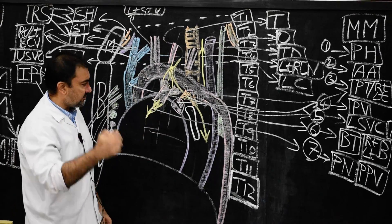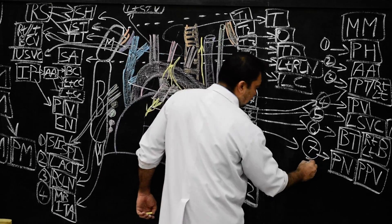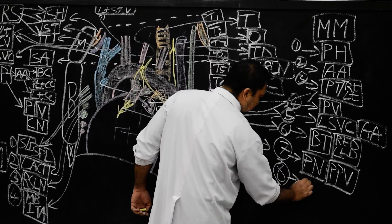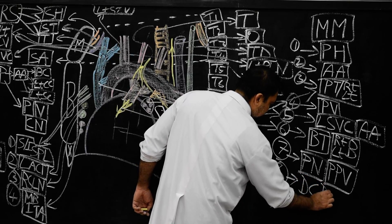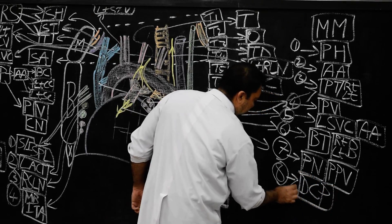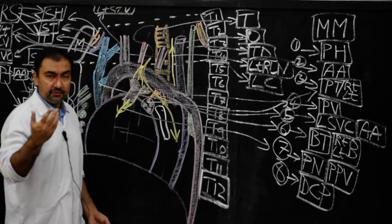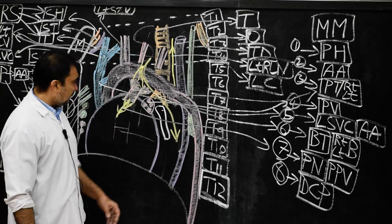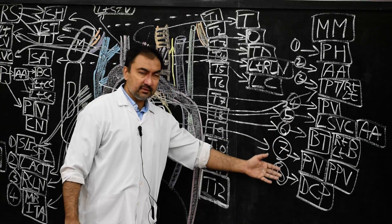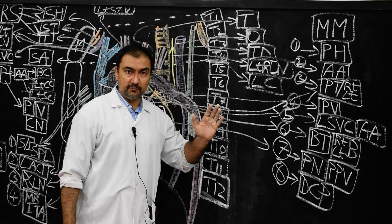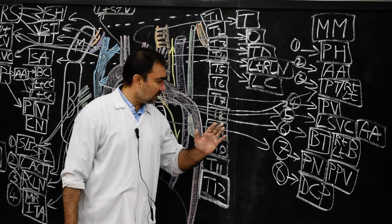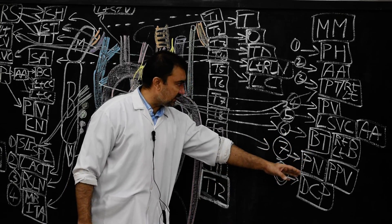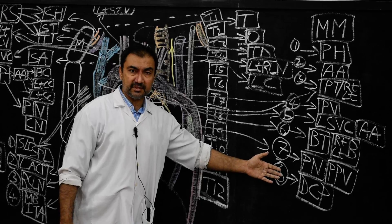Last structure — structure number eight belonging to middle mediastinum: the deep cardiac plexus. The entire deep cardiac plexus belongs to middle mediastinum. These are the 8 structures which belong to the middle mediastinum, including the phrenic nerve and pericardiophrenic vessels and the deep cardiac plexus.